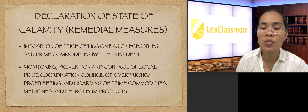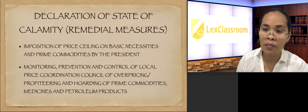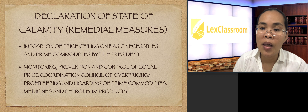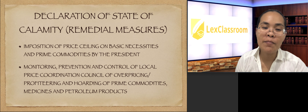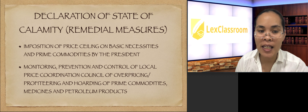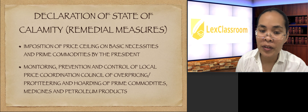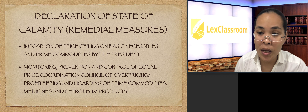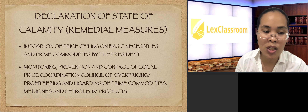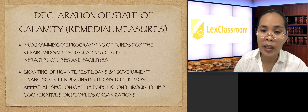When there is an existing emergency or calamity, the law provides for remedial measures. First, the imposition of price ceiling on basic necessities and prime commodities by the president — there should be a cap. Second, there is a need to monitor, prevent, and control overpricing and profiteering through the local price coordination council, covering prime commodities, medicines, and petroleum products. What is specified are the basic necessities of human beings.